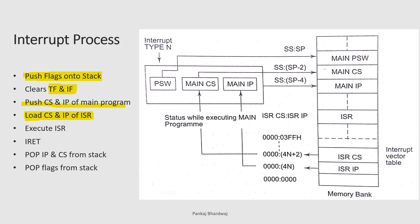The interrupt service routine has a specific location where it is to be serviced. To execute the interrupt program, we need to load the ISR's code segment value plus the instruction pointer value so that we can calculate the exact physical address where the interrupt service routine is available. After pushing all the CS, IP, and flags onto the stack, we load the interrupt service routine's code segment and instruction pointer values, then execute the ISR.